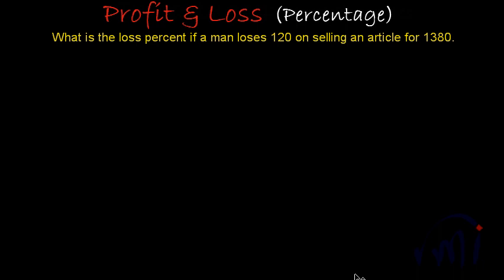So sale price over here is 1380. I'll write sale price which is SP is 1380 and loss is 120. This is the loss on some cost price. So we are provided with sale price and loss.